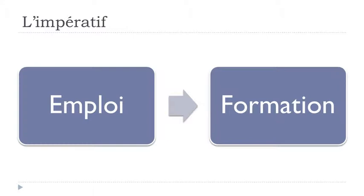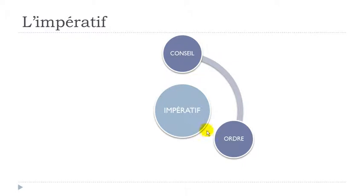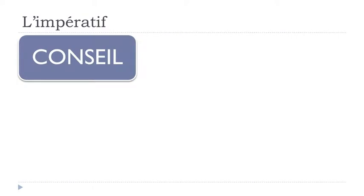First, l'emploi — when do we use the imperative. It's quite simple: we've got three main uses. The first one is le conseil, which translates as 'advice,' so if you want to give advice to someone, you use the imperative form. Then if you want to give an order — l'ordre — and then la défense, if you want to forbid something to someone. So: conseil, ordre, ou défense.